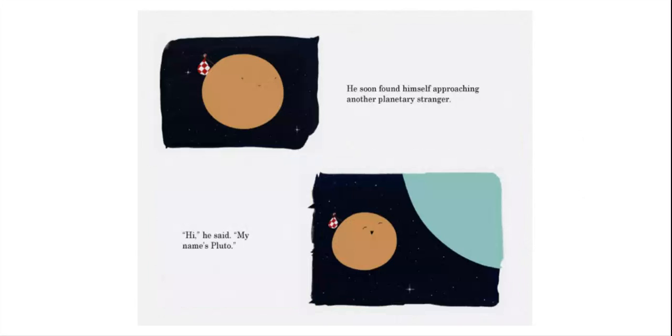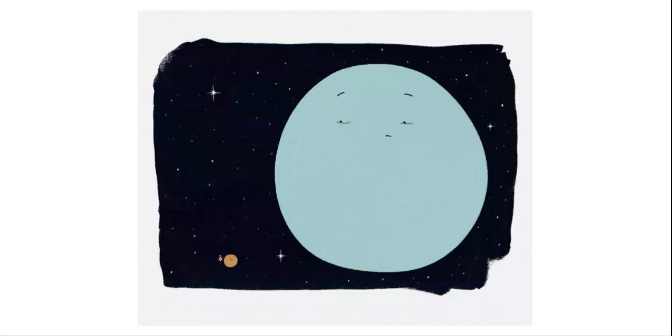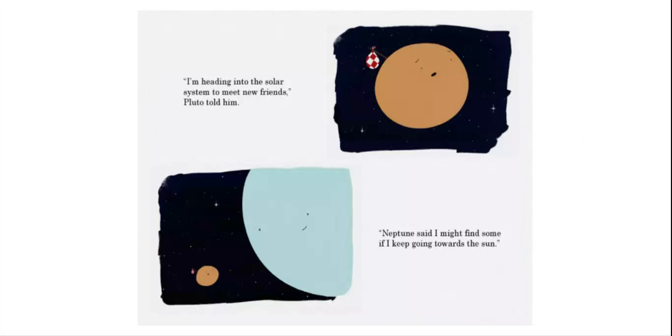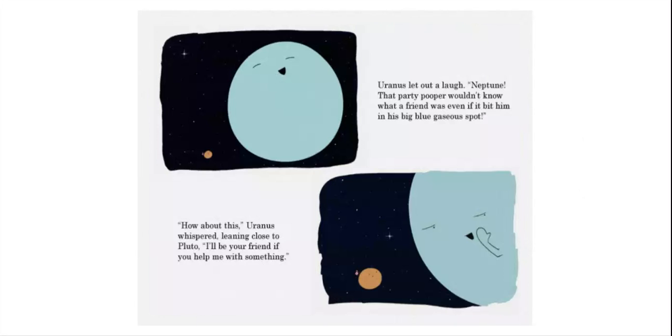He soon found himself approaching another planetary stranger. Hi, he said. My name's Pluto. Hey there, shortstop, the planet yelped. The name's Uranus. What's a shrimpy rock like you doing out of orbit? I'm heading into the solar system to meet new friends, Pluto told him. Neptune said I might find some if I keep going towards the sun. Uranus let out a laugh. Neptune, that party pooper wouldn't know what a friend was even if it had bit him in his big blue gaseous spot. How about this, Uranus whispered, leaning close to Pluto. I'll be your friend if you help me with something.